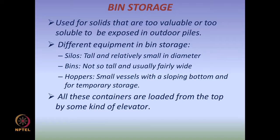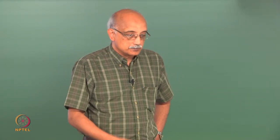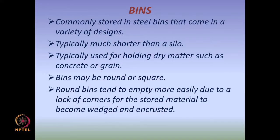There are three types of equipment used for indoor storage: silos — tall, small in diameter; bins — not so tall, wide; and hoppers — small vessels with a sloping bottom intended only for very temporary storage. They are all loaded from the top and discharged from the bottom for first-in first-out flow. Bins are typically made of steel or concrete, used for holding dry matter such as concrete or grain, and can be round or square. Round bins are better from a discharge viewpoint because flow past the walls tends to be more uniform compared to a rectangular bin with sharp corners.